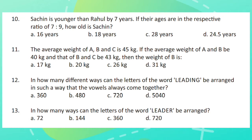Question 11. The average weight of A, B and C is 45 kgs. If the average weight of A and B is 40 kgs and that of B and C be 43 kgs, then the weight of B is?